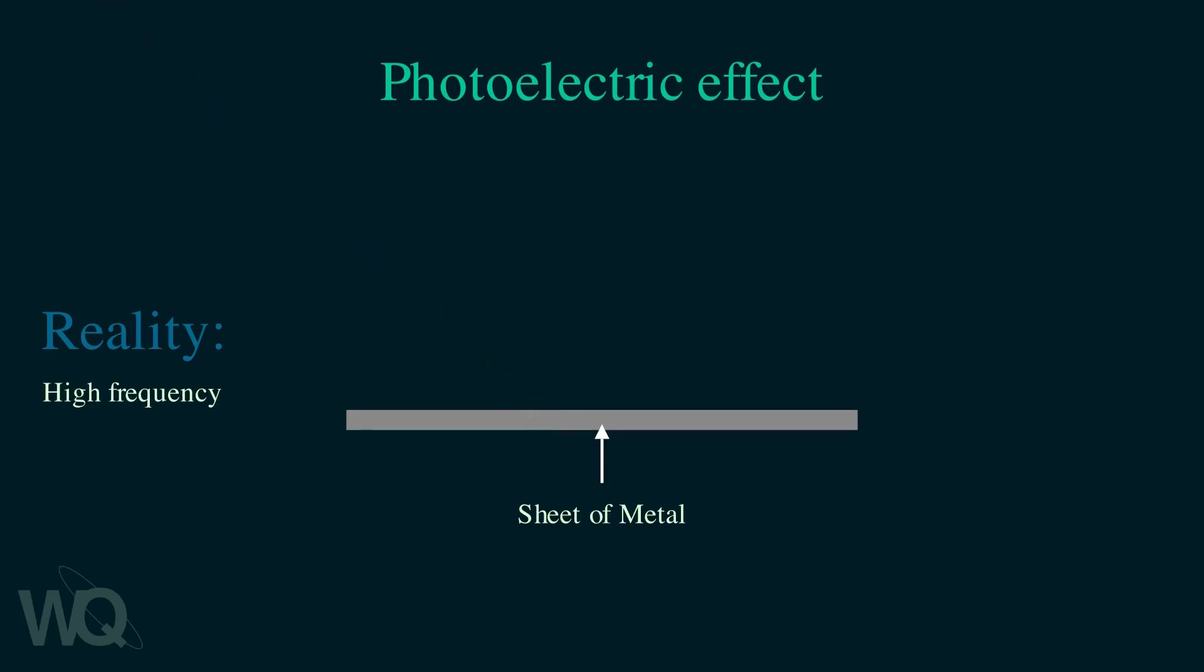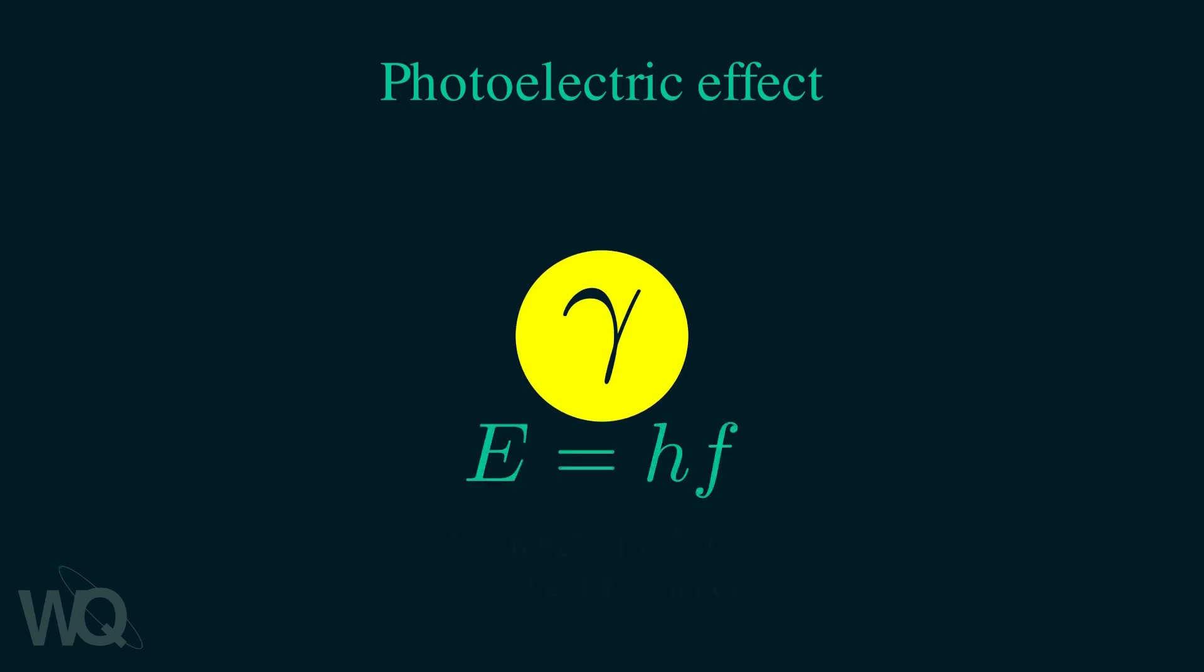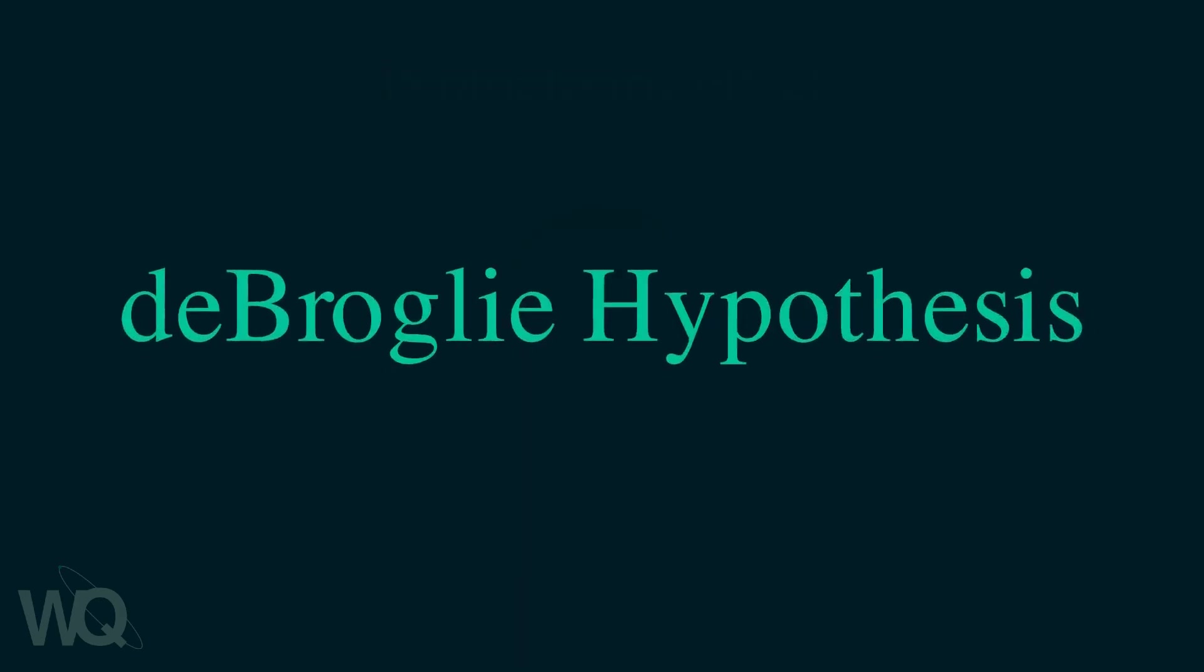Einstein explained this by proposing that light consists of discrete chunks or particles called photons. The energy of these photons is proportional to their frequency. Specifically the energy of a photon is Planck's constant times the frequency of light. This groundbreaking insight laid the foundation for quantum mechanics and it inspired another bold conjecture which is known as the de Broglie hypothesis.